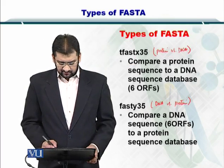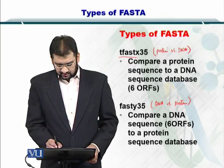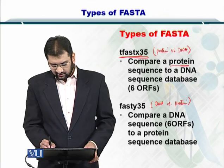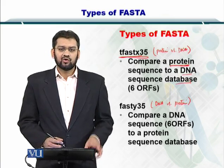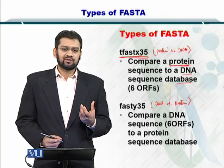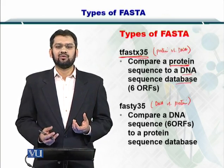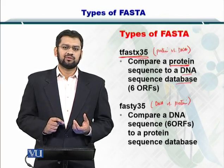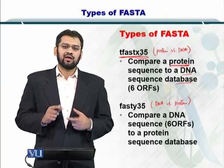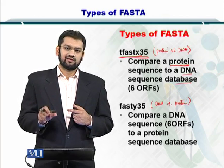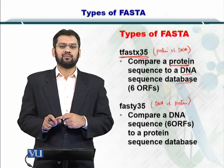The third type is the TFASTX35. It can help you to compare a protein sequence to a DNA database. Your query is a protein sequence, while on the database side you have a DNA database. You take one sequence from the nucleotide database, compute all six ORFs and translate them into proteins, and then perform the comparison.